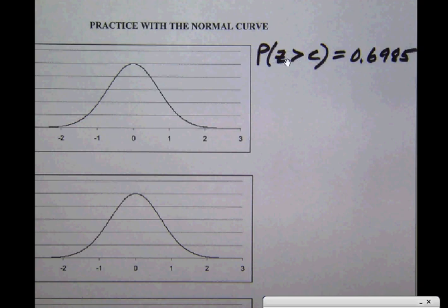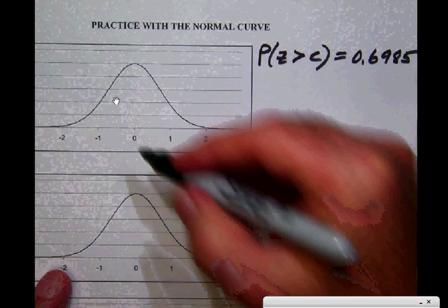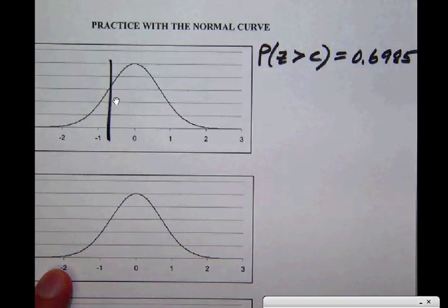We know that the area under the curve to the right of our unknown z-score is 0.6985. I don't know exactly where to draw that line. It's just going to be a guess. Since this is 0.6985, that's greater than half, so it's going to have to be over this way someplace. I'm not sure where this is going to be. I'm just going to draw it in there someplace, and I'm going to call this c.